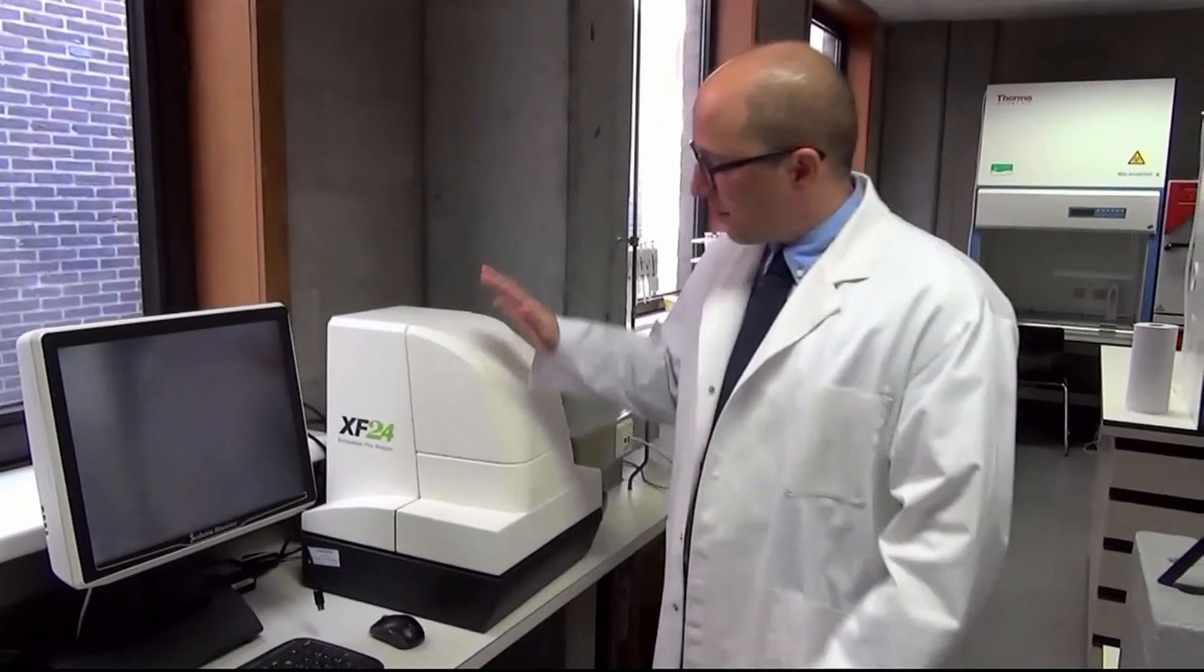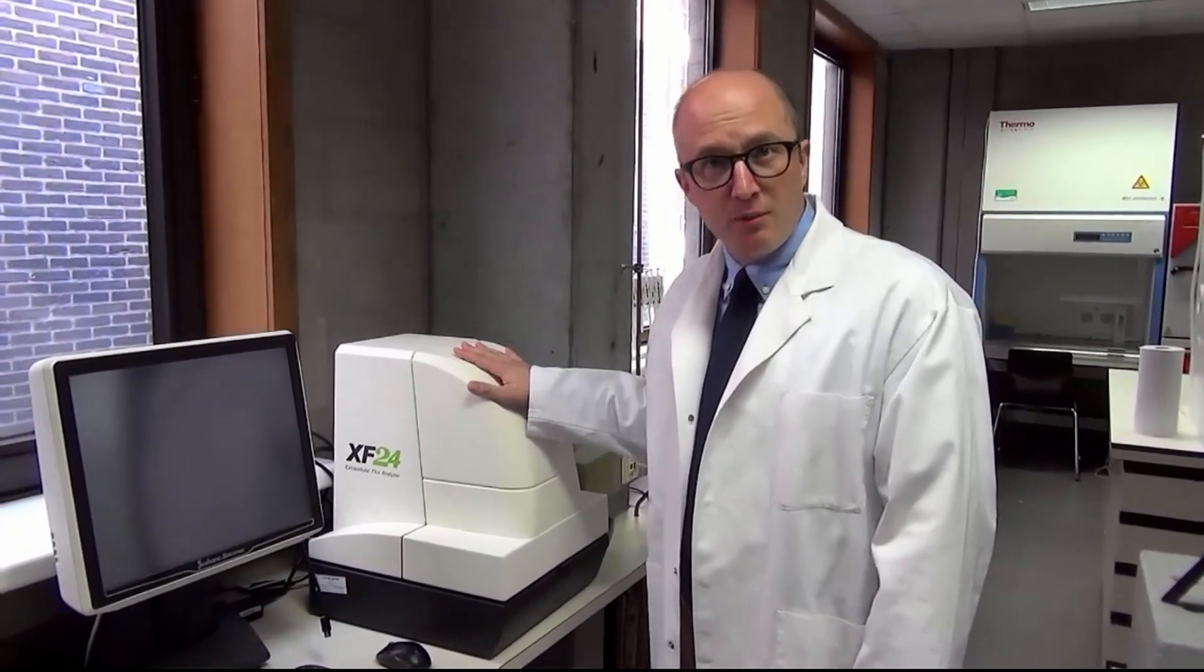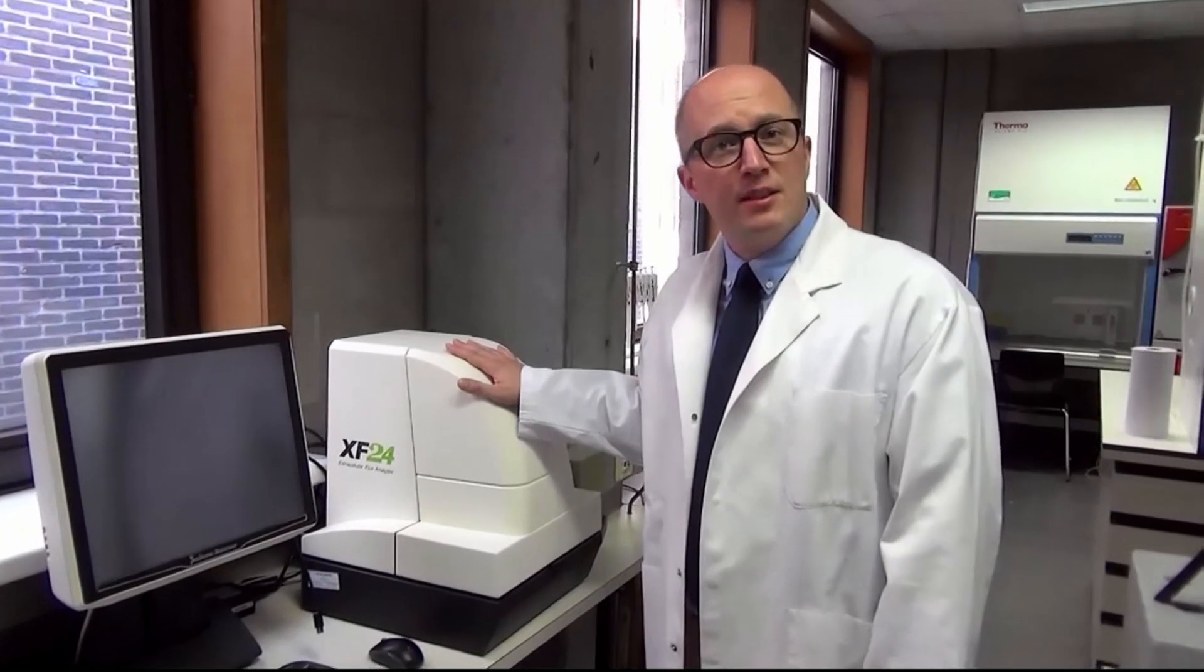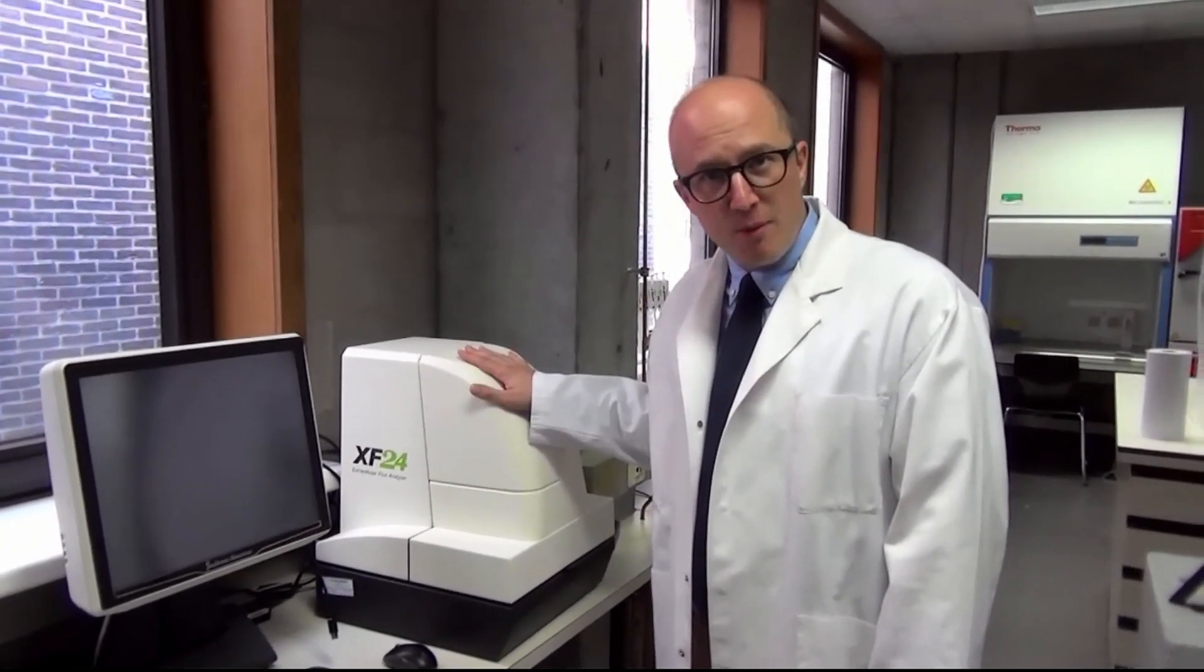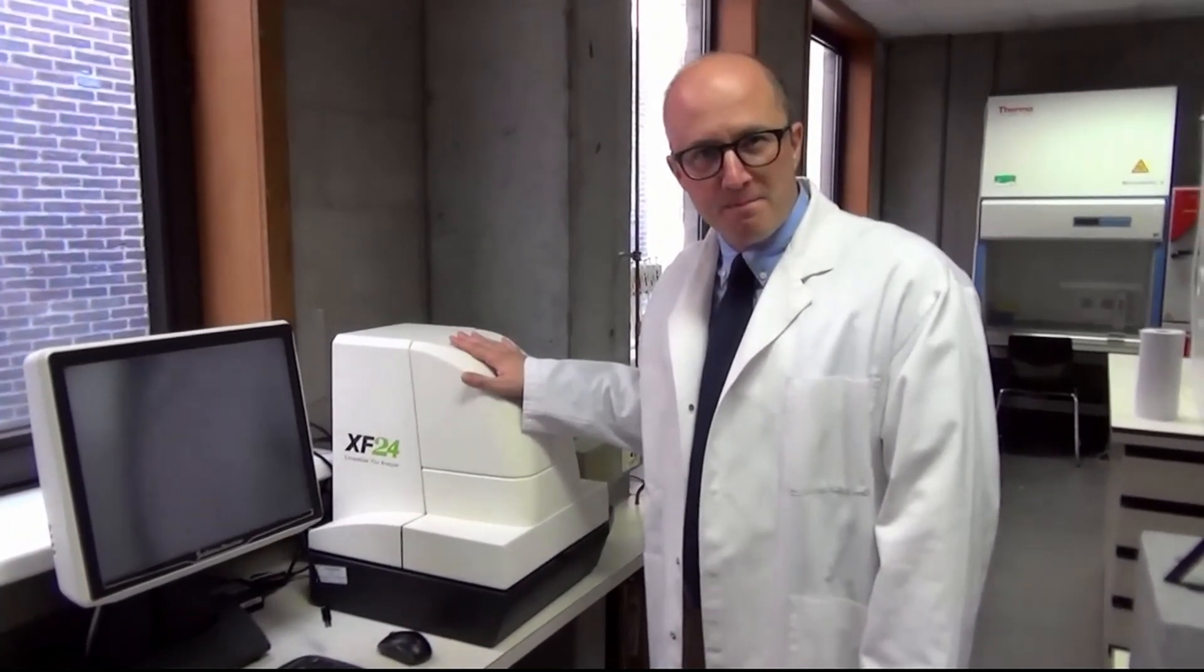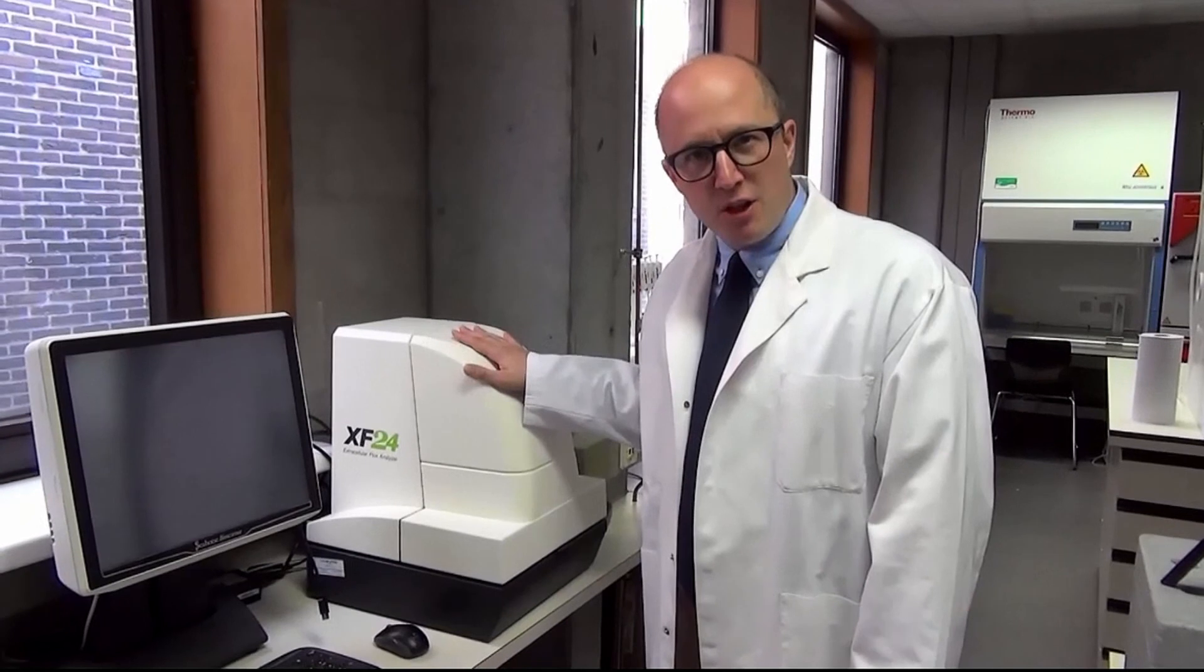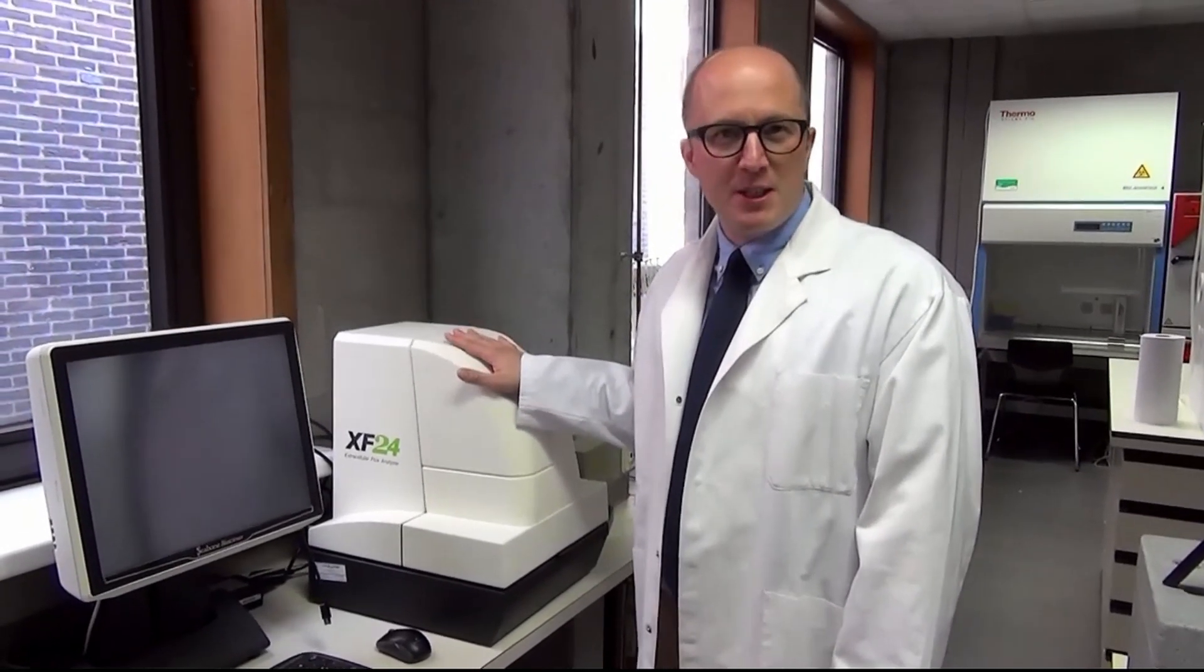To relate what we have found on a transcriptomic level, we go a step further. We look into the functional properties of exposed cells. We can do this with a state-of-the-art Seahorse Agilent extracellular flux analyzer. With this instrument, we can in real time measure the mitochondrial activity of the cells as well as their glycolytic activity. This gives us information on a number of key parameters that describe these two metabolic pathways. In such a way, we get an idea on what we call functionomics, functional properties of cells that were previously exposed to pathogens, toxins, or contaminants.